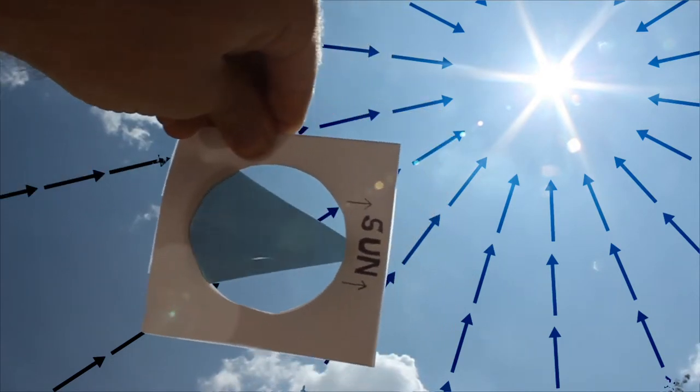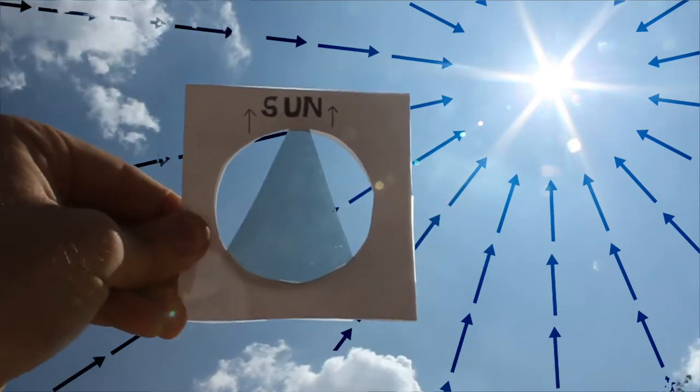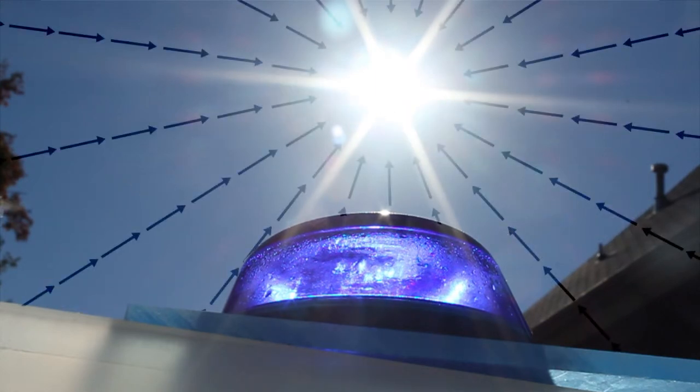This gives the bees a type of solar compass, allowing them to always know the precise position of the sun in the sky. A honeybee's entire environment seems to be constantly pointing towards the sun.